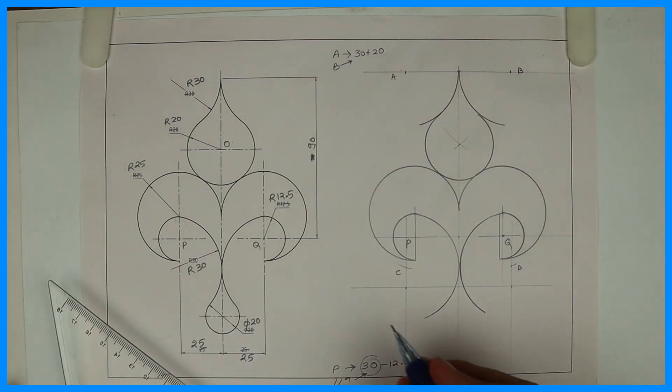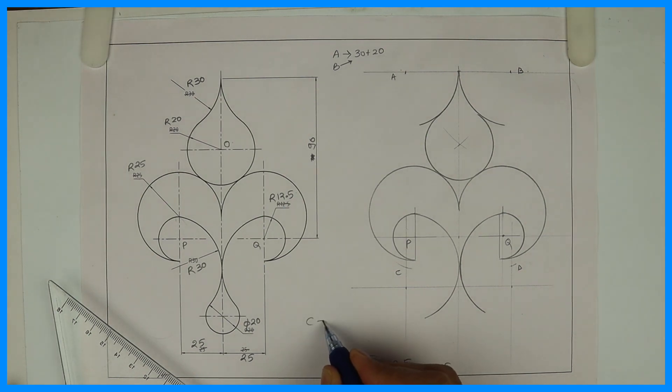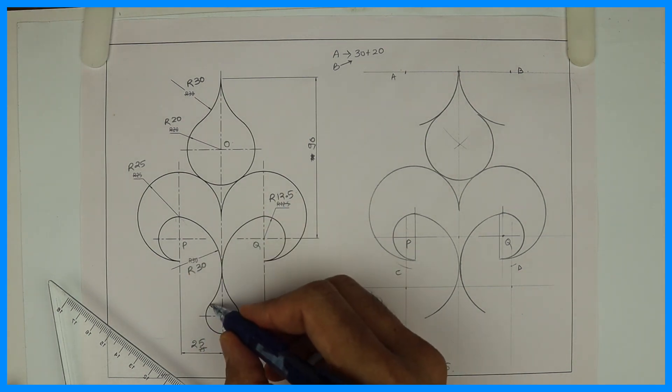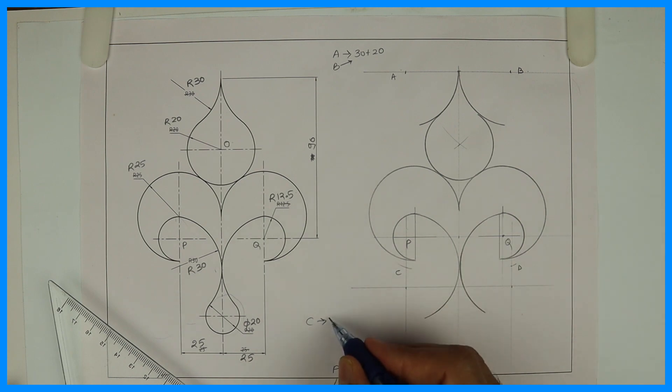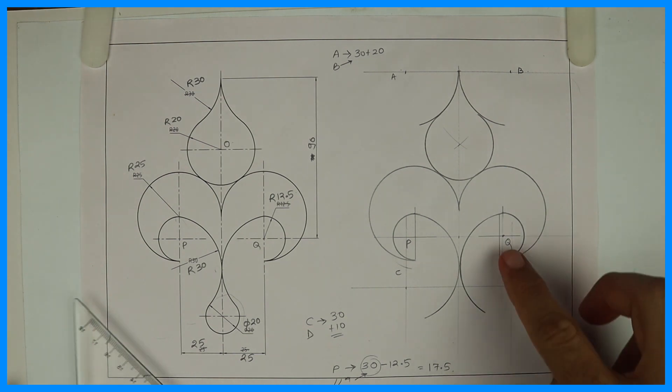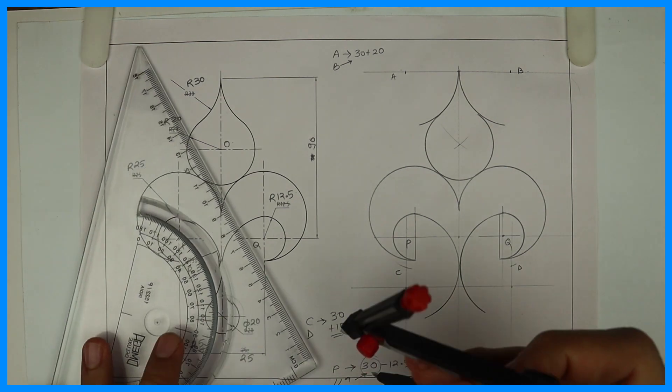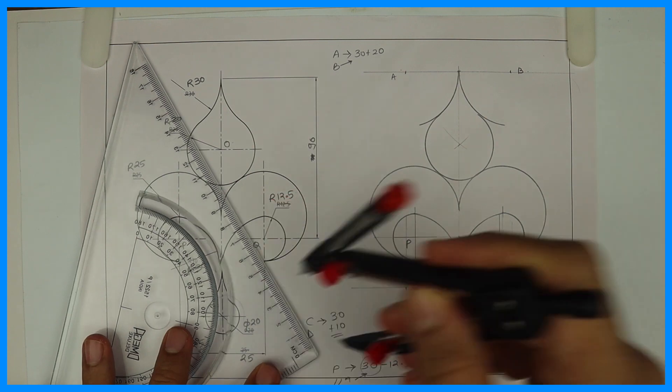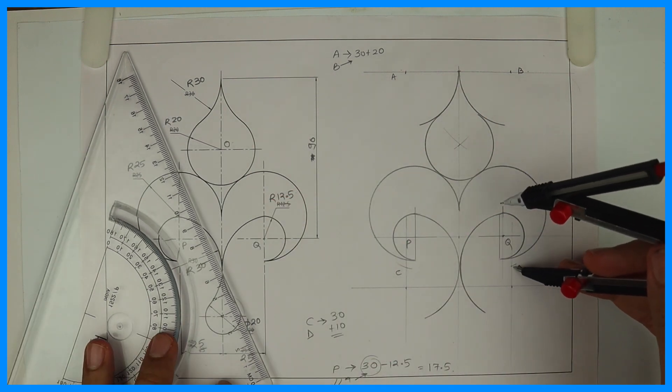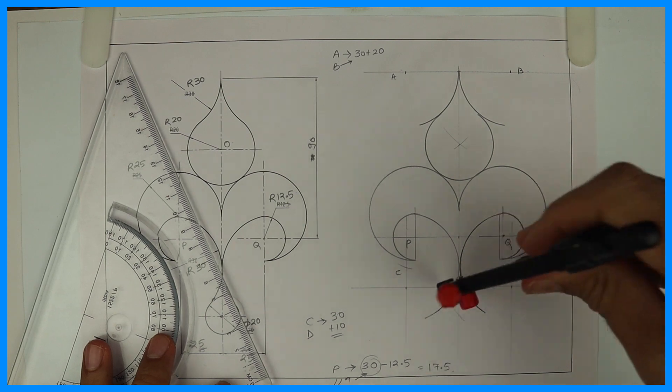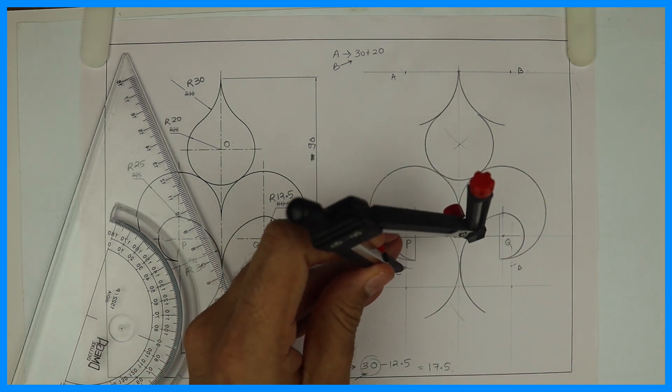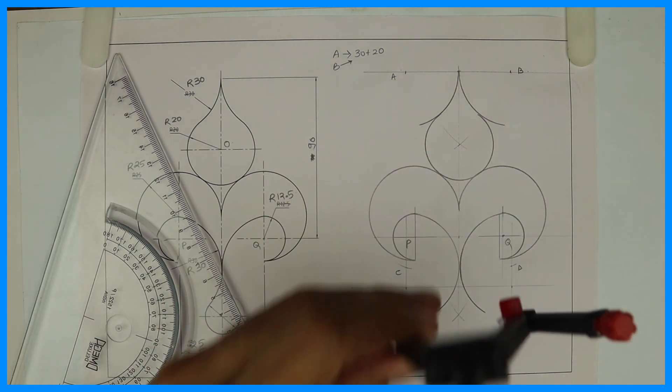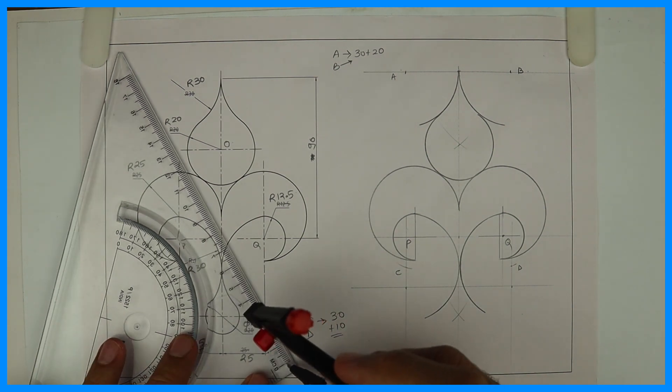Now we need to draw diameter 20 which is external to radius 30. So from C I need to cut 30 plus 10, and from D also 30 plus 10. In short, we need to take 40 from C and D. From C I will cut 40 and from D I will cut 40. Wherever they intersect, from there I can draw radius 10.